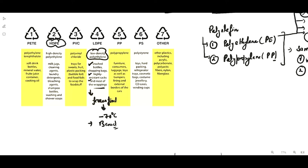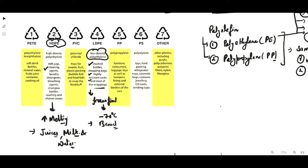If we talk about high density polyethylene, HDPE, this one has a high melting point and is used in the packaging of juices, milk, and water. Apart from that, it is also used in different types of packaging like cleaning agents, laundry detergent, bleaching agents, shampoo bottles, and washing and shower soaps — all made from HDPE.